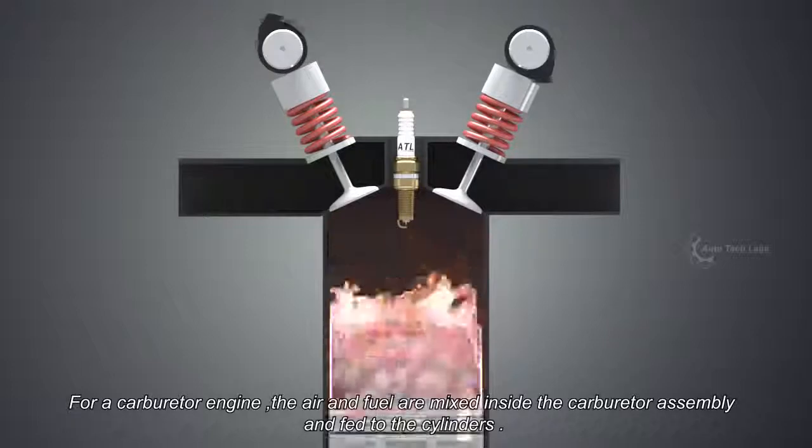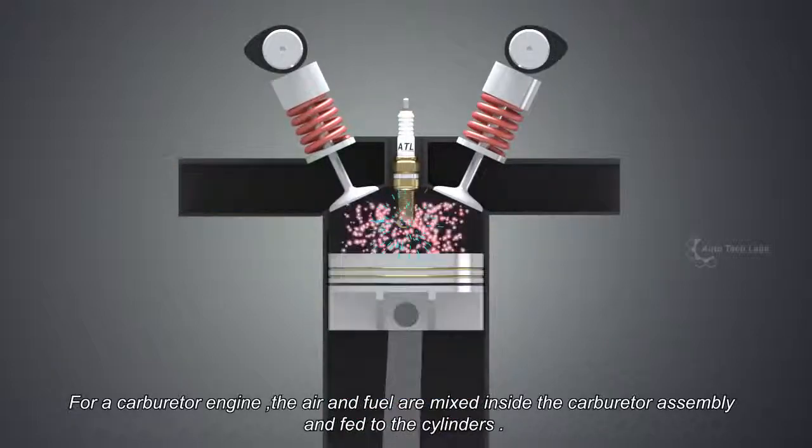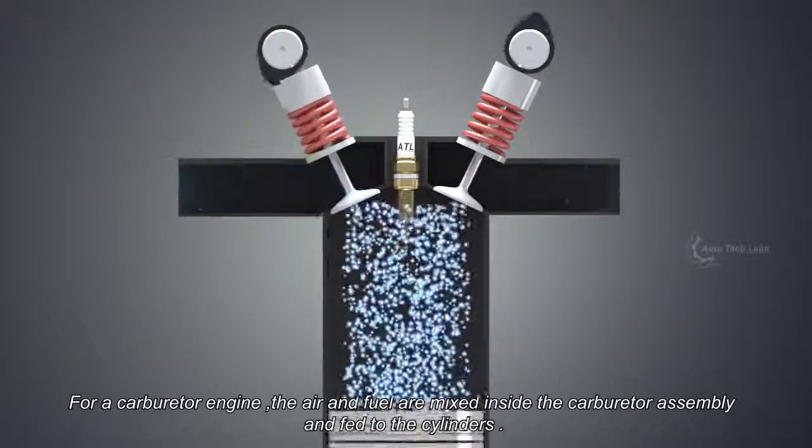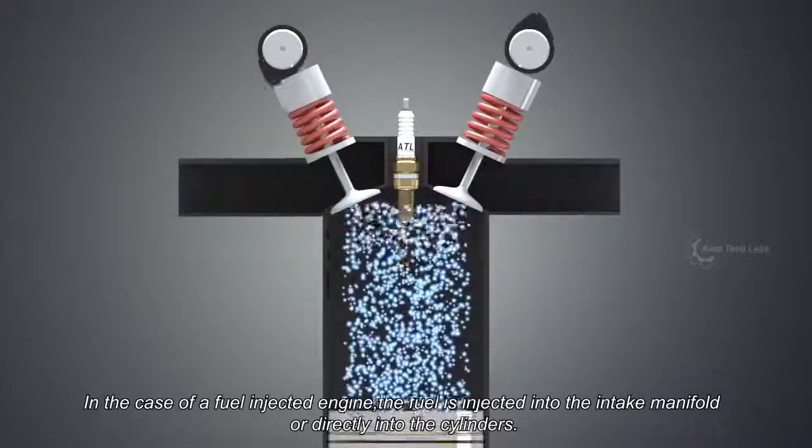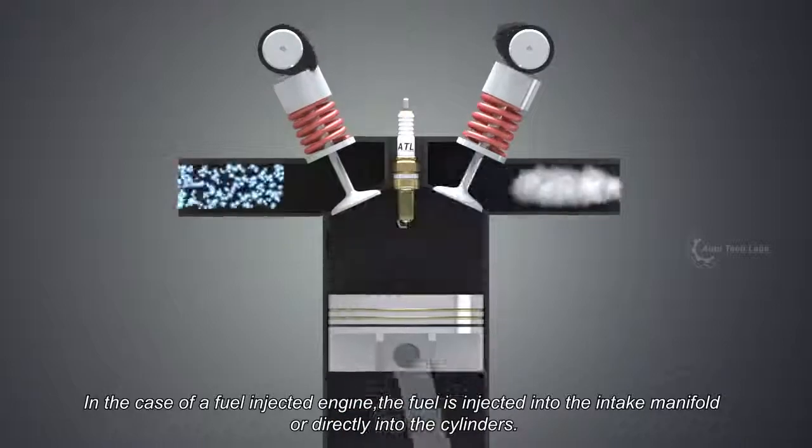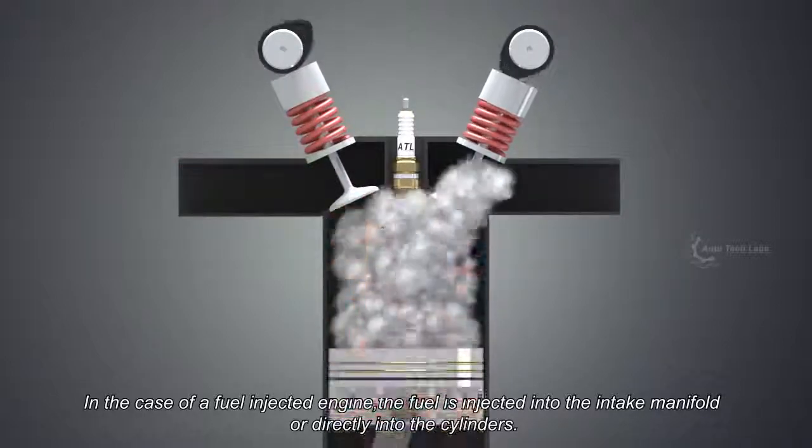For a carburetor engine, the air and fuel are mixed inside the carburetor assembly and fed to the cylinders. In the case of a fuel injected engine, the fuel is injected into the intake manifold or directly into the cylinders.